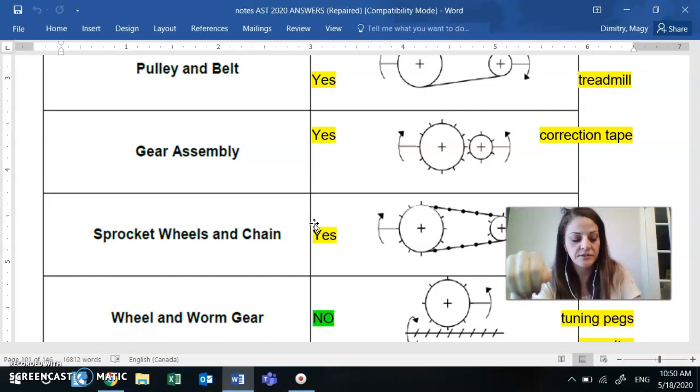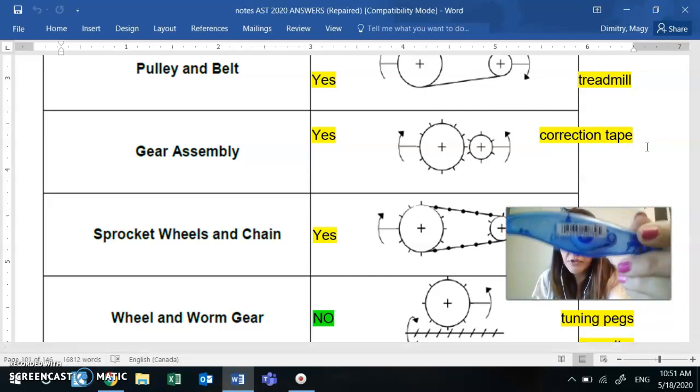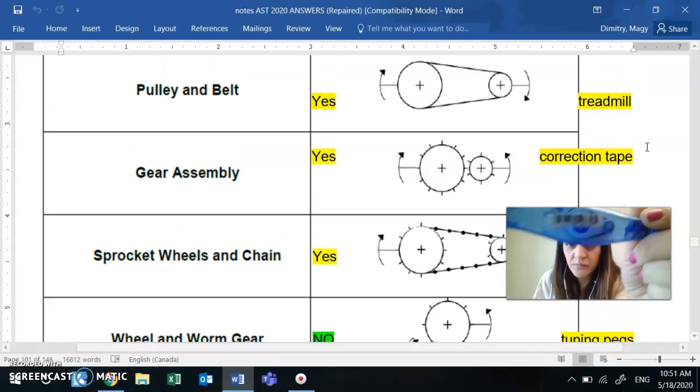Same with this friction gear, I turn one, the other turns also. There is no translation. Example for gear assembly, you have inside correction tape you have some gears in there. But the correction tape you also have, I'm sure you've seen this before, you have a belt and pulley.